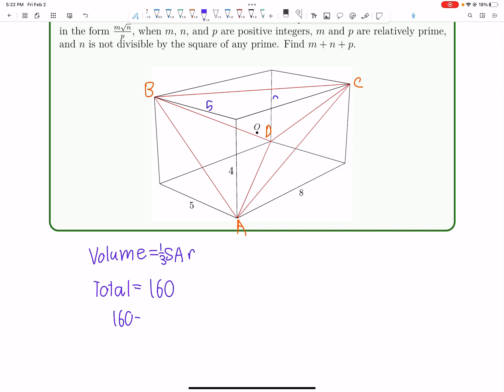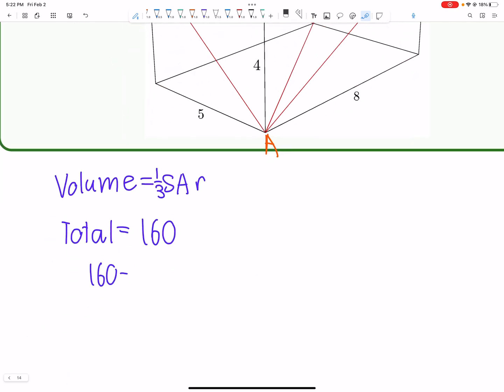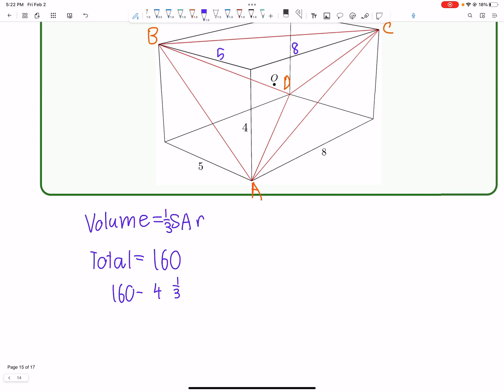And now what we have to do is subtract off all these little triangular prisms here. And each of them has three legs, four, five, eight. And how many are there that we need to subtract off? Well, let's be careful about this. We got one here. Do we just have one? We have basically one at four of the vertices. We have four of these. One, two, three, four. So 160 minus four times one third, or there's a nice little formula. One sixth times four times five times eight.